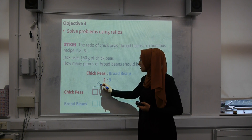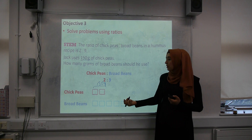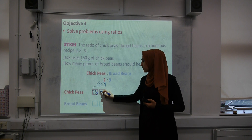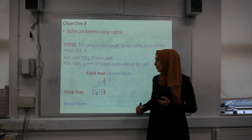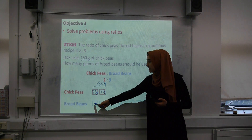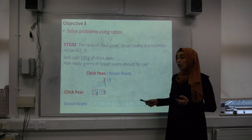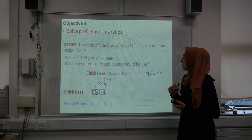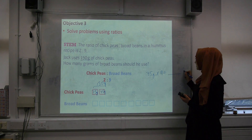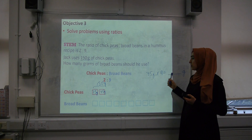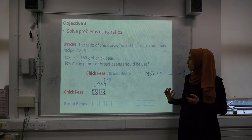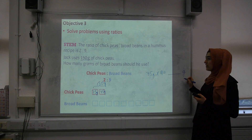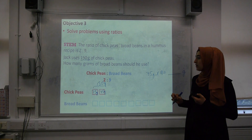Since 2 boxes equal 150 grams, I divide by 2 to find that 1 box equals 75 grams. For the broad beans, I have 9 boxes, so I multiply 75 grams by 9 to get the total amount of broad beans needed — that calculation is your task to work out without a calculator; use column method or another multiplication method. Don't forget to include the units, otherwise you will lose a mark in the exam.